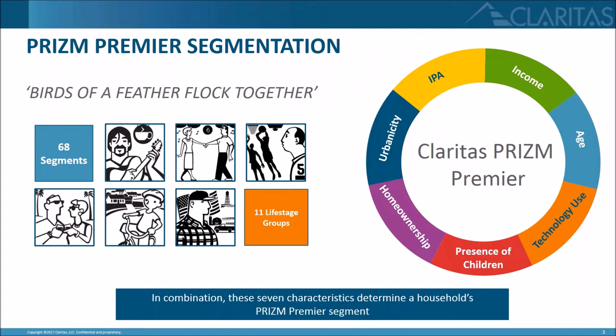I'd like to elaborate a little bit further on IPA and technology use, as these are two of our newer drivers in the system. IPA stands for income-producing assets. A quick example to help explain the difference between IPA and household income: let's say you and I have the same salary of $500,000 a year — you're welcome for the raise — however, you have invested your money, you have a 401k and a robust savings plan.